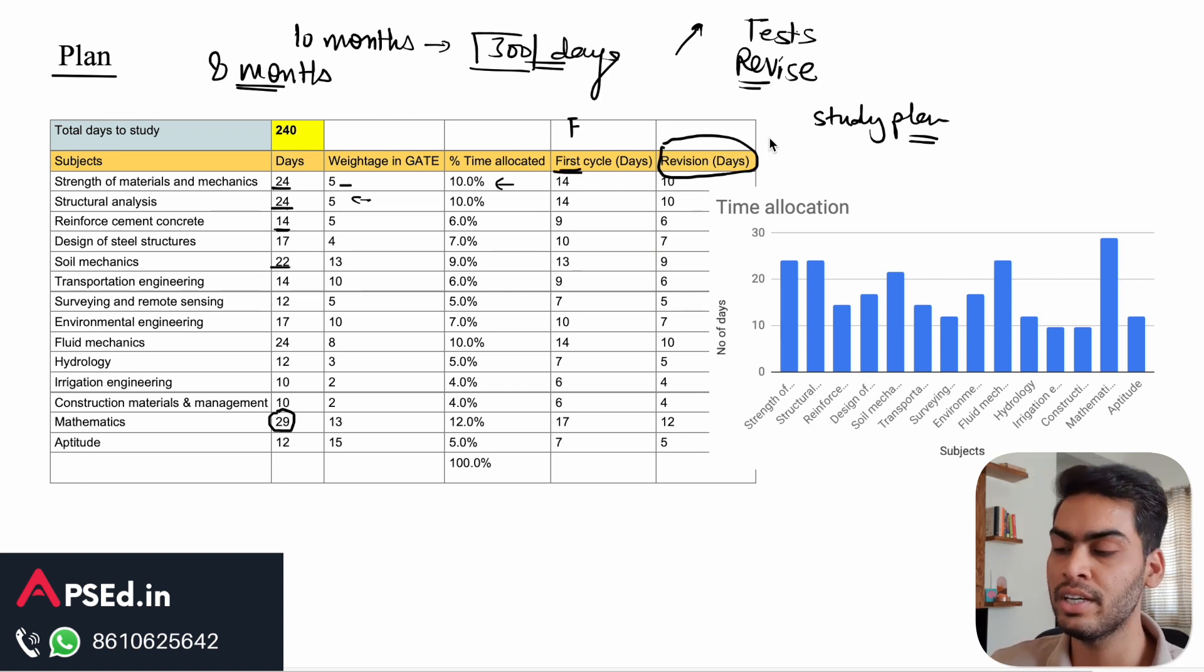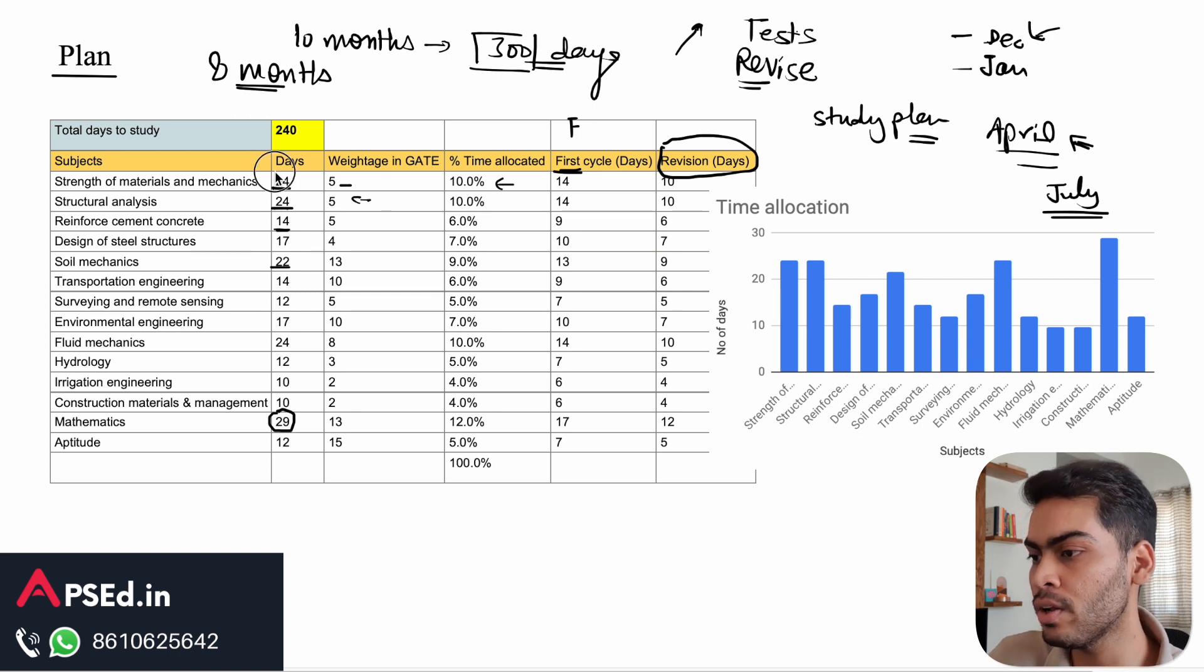I have broken this total number of days into first time reading and then allocating some days for the revision also, because you can't just read any subject once and expect to remember it. Something that you are studying in April, you will not remember in December. You will not be able to remember the subject that you are studying in April even in July. You will feel that you have to completely start fresh for that subject. So you can't spend all these 24 or 29 days for your first studying cycle itself. You need to leave some time for revision also.